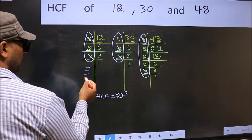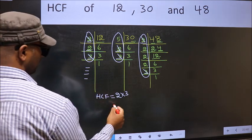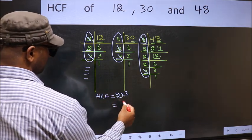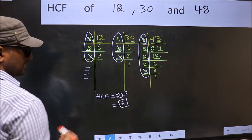No more numbers have been left out. So, our HCF is 2 into 3, 6 is our HCF.